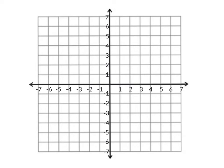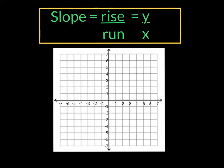This is the x-axis, and this is the y-axis. For us in math, the slope will be the rise over the run, or the difference in the y-coordinates divided by the difference in the x-coordinates.